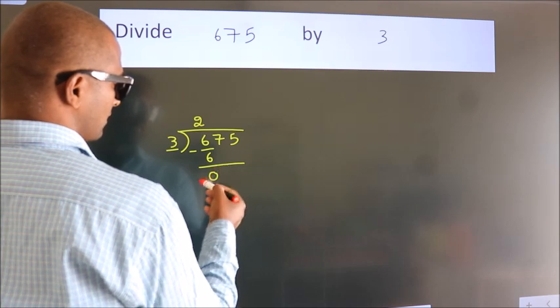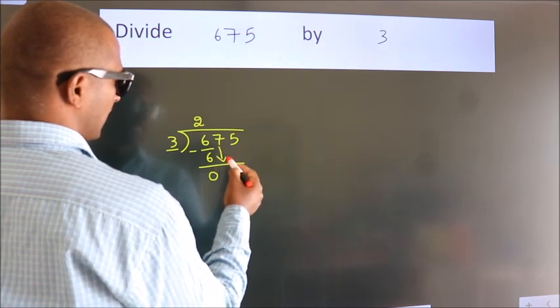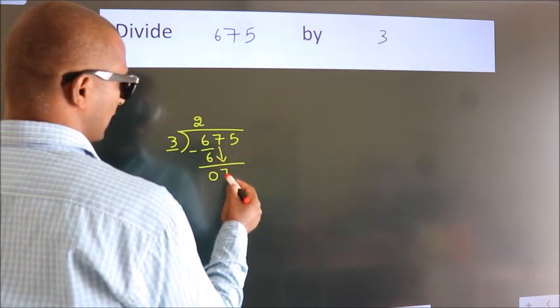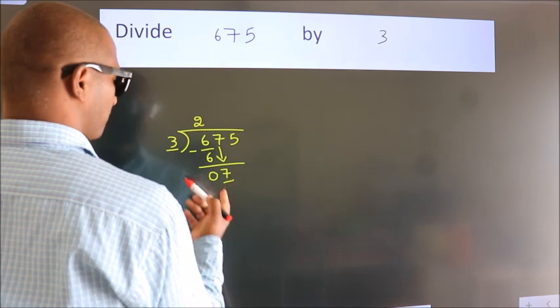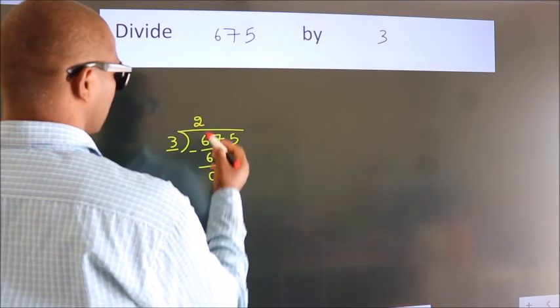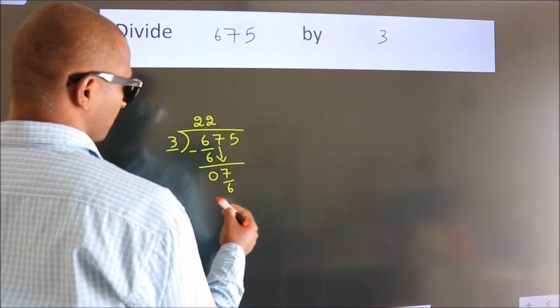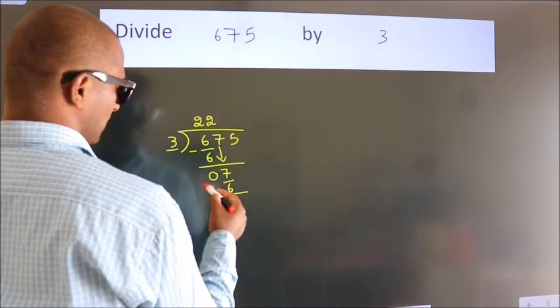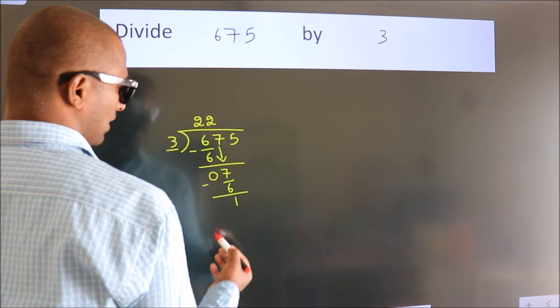After this, bring down the beside number. So, 7 down. A number close to 7 in 3 table is 3 times 2, which is 6. Now we subtract. We get 1.